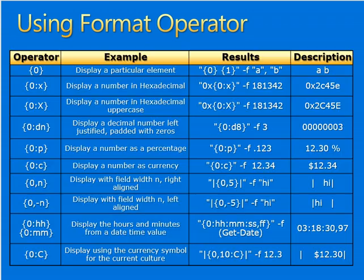You can see the example to reverse the order of strings using zero-based index. Let me show you a few of these formatting operators — you can see what each operator means, starting with displaying particular elements. You can see the result: display number in hexadecimal lowercase or uppercase, number zero justified, percentage, currency, or using field width and time/hours format.